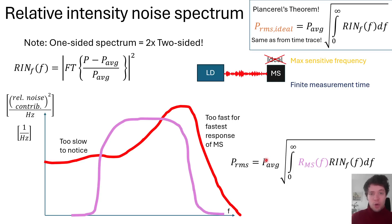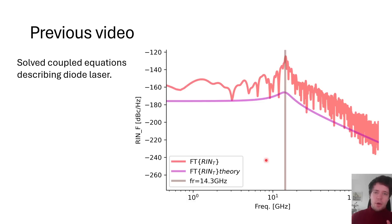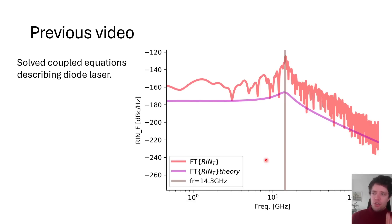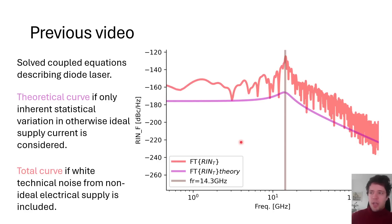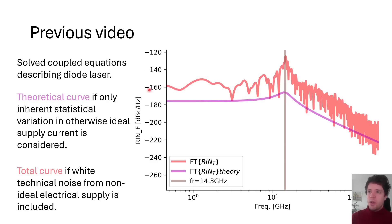Now I want to spend some time on where these RIN curves come from for a typical laser diode. In a previous video, I solved differential equations describing how variations in the input current cause variations in the output photon number. There is a fundamental variation in current even if you intend to keep it steady, because the varying number of electrons entering the diode creates a baseline noise — shown by the purple curve. Additional technical noise from imperfect power supplies pushes the curve up further. Subtracting the average photon number, dividing by it, and taking the Fourier transform gives the red RIN curve.